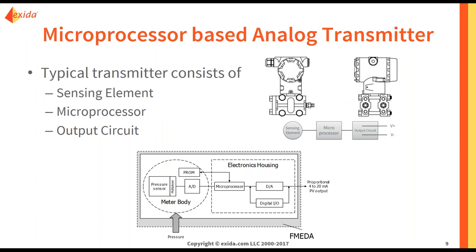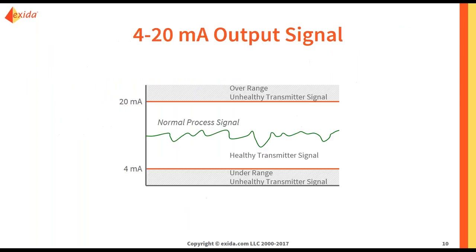A microprocessor-based analog transmitter is going to have a sensing element, a microprocessor, and an output circuit. The output gives a representation of the process value you are measuring in the form of 4 to 20 milliamps. That measurement might be a pressure measurement, a temperature measurement, a flow or level measurement, any measurement type. But it is going to give that in the form of 4 to 20 milliamps.